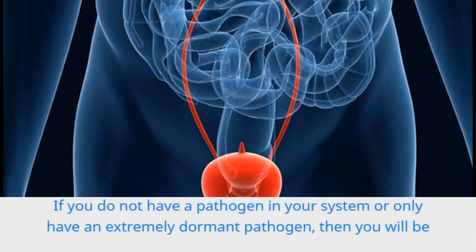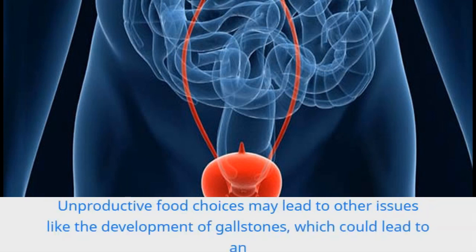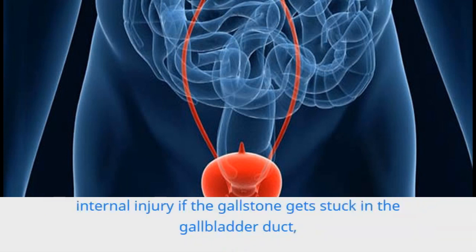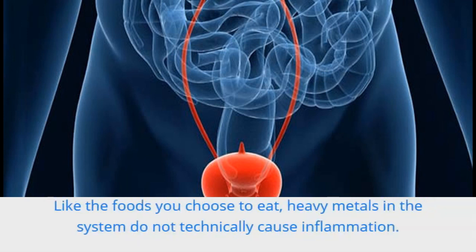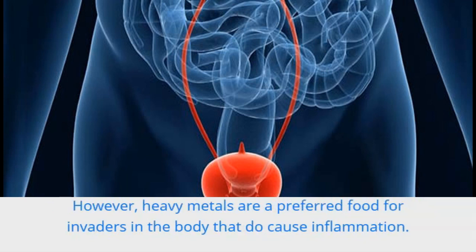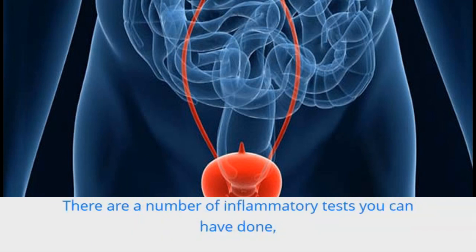Fueling these pathogens can lead to a host of negative reactions in the body, but the gluten is not directly responsible for any of these negative consequences. If you do not have a pathogen in your system, or only have an extremely dormant pathogen, then you will be able to eat all the gluten you desire without creating inflammation. Unproductive food choices may lead to other issues, like the development of gallstones, which could lead to an internal injury — but any inflammation that arises from this would be injury-related, not pathogen-related. Like the foods you choose to eat, heavy metals in the system do not technically cause inflammation; however, heavy metals are a preferred food for invaders in the body that do cause inflammation, so it is very important to remove heavy metals from the body.